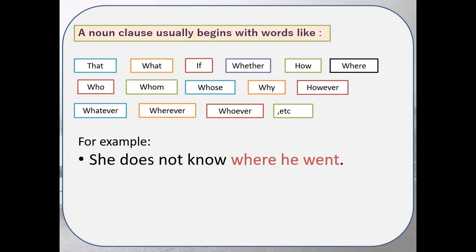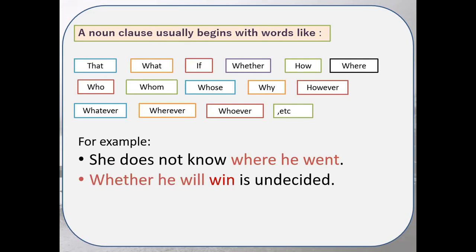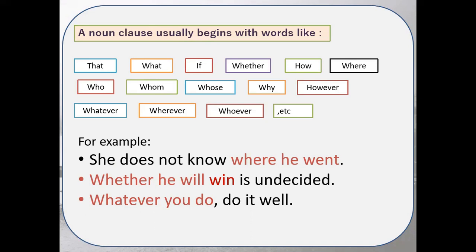For example: 'He does not know where he went' — here 'where he went' is the noun clause. 'Whether he will win is uncertain' — here 'whether he will win' is in the subject position. 'Whatever you do, do it well' — again, 'whatever you do' is a noun clause, and its position is the subject position.